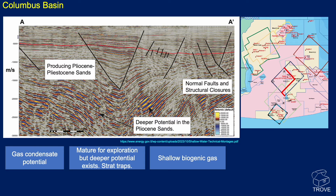Another line, this time from the Columbus Basin. What we can see here are the Pleistocene and Pliocene reservoirs from the Paleo Orinoco. The source rocks in this region tend to be gas-prone, so there's lots of gas condensate potential in the region. It tends to be quite mature for exploration — there's been a lot of drilling over the years — but deeper potential exists, and some stratigraphic traps are probably worth investigating.